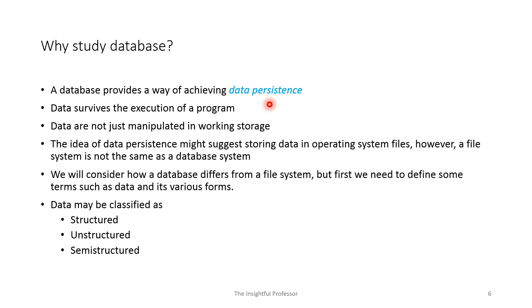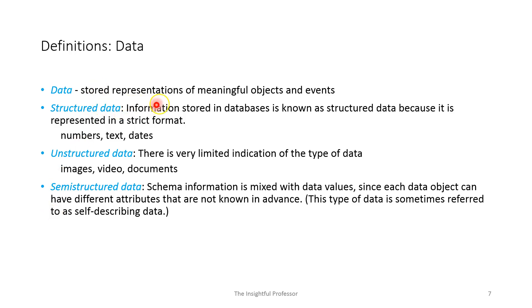Before going on, we've been talking about data persistence but we haven't defined what we mean by data. Data could be classified in different ways: it could be structured, unstructured, or semi-structured. Data itself could be considered stored representations of meaningful objects and events. When you build a database, you pick some subset of the real world — some application domain or problem domain. You don't try to represent the entire universe, just some portion relevant to your purpose.